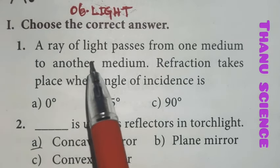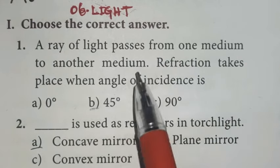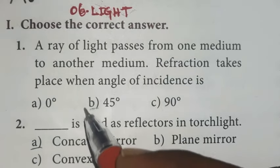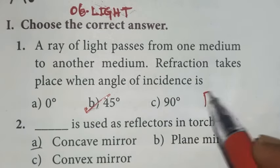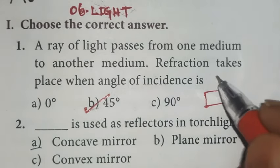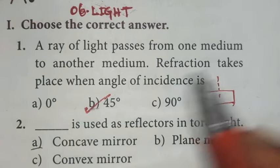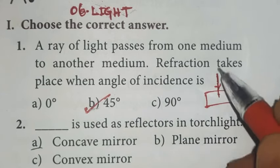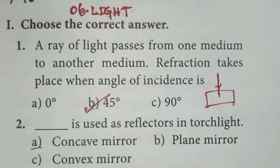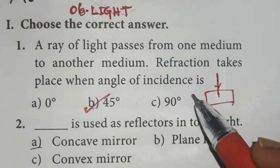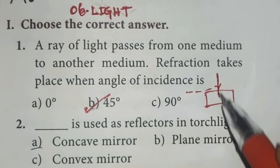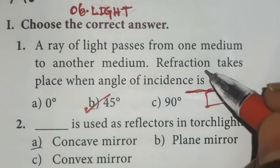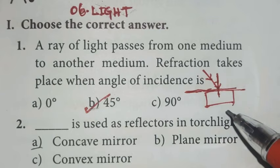First one, a ray of light passes from one medium to another medium. Refraction takes place when angle of incidence is 45 degrees. If you look at the diagram, this is the normal line. If you say 0 degrees, the incident ray goes to the normal line. If it goes to the normal line, there will be refraction. If you go to 90 degrees, suppose the incident ray goes to normal level 90 degrees, it will be refraction. So if you go to 45 degrees, it will be refraction.